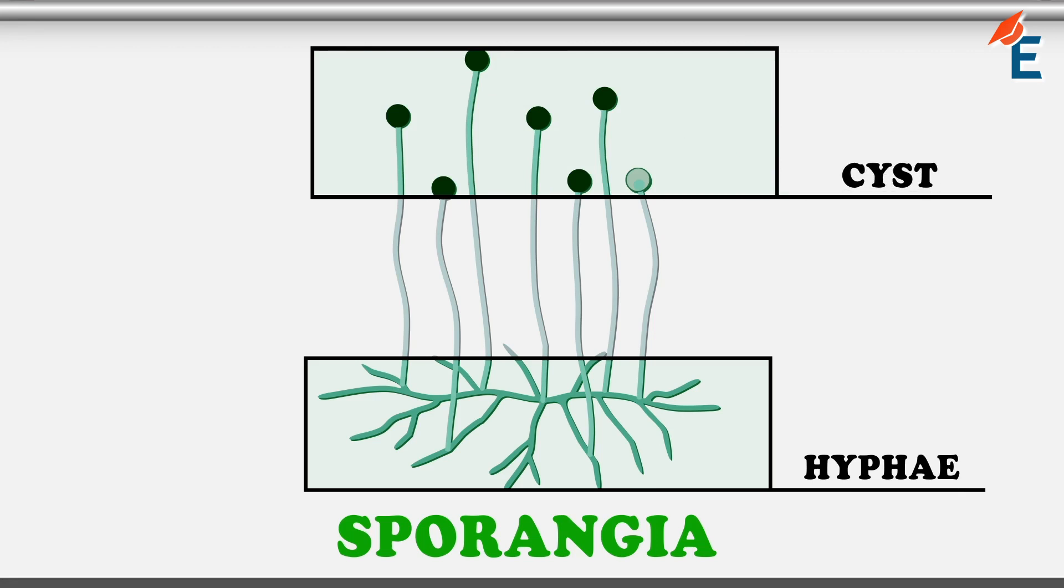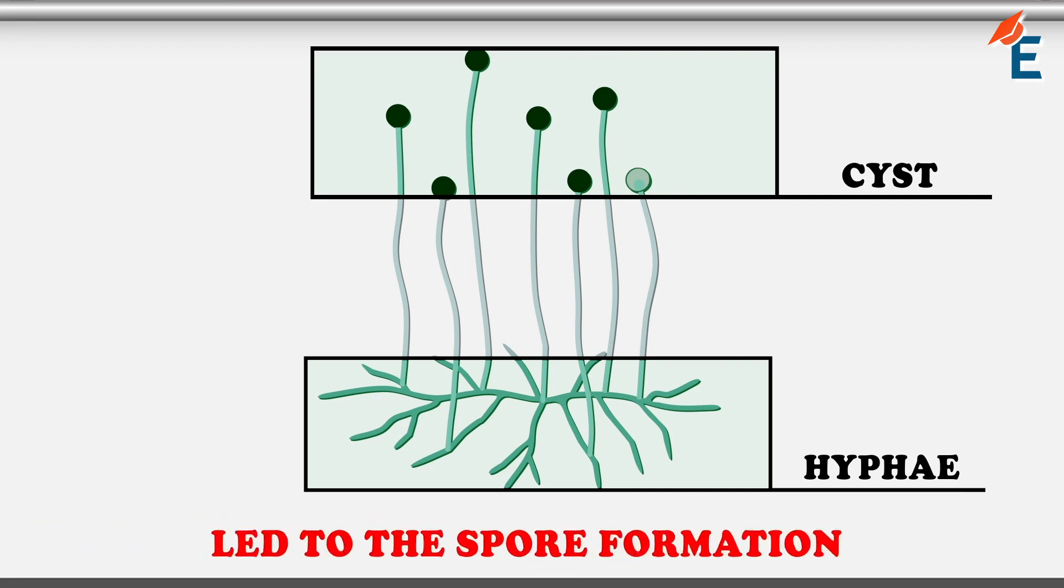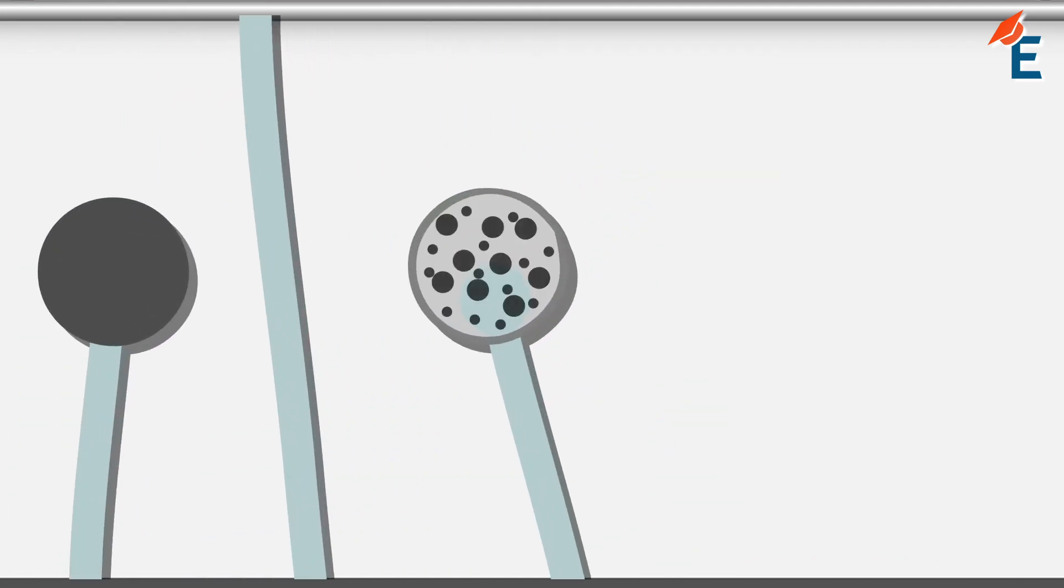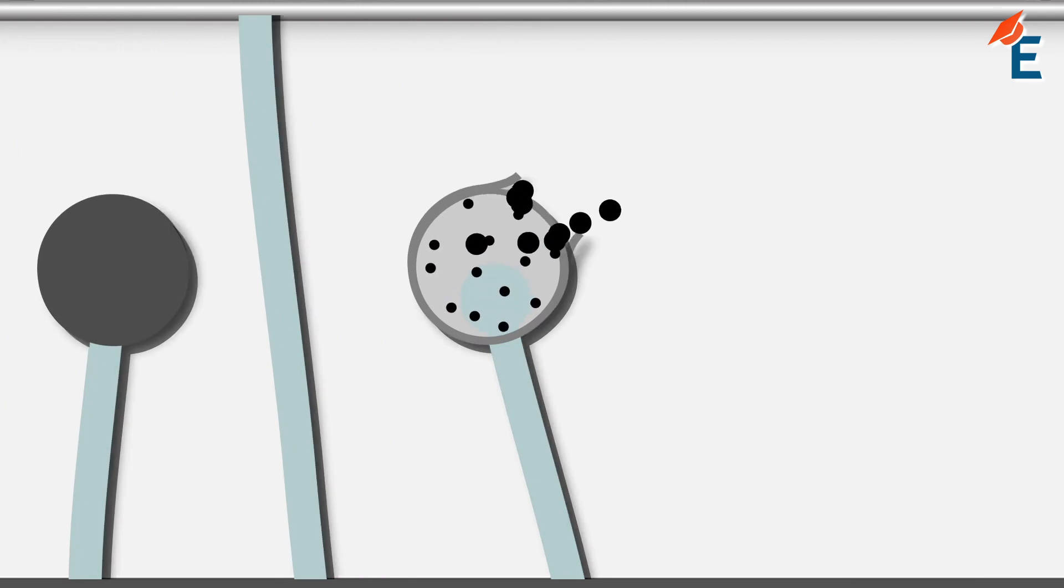The cyst contains the spore formation, or we can say leads to spore formation. What happens is when the sporangium will grow and mature and convert into adult, the cyst that is containing the spores will burst and the spores of the cyst will spread all over.